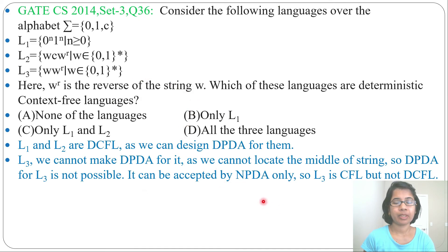So it is a context-free language, but not deterministic context-free language. Now just check in the options where L1 and L2 is present. In option C, L1 and L2 is given, so the answer will be only L1 and L2.